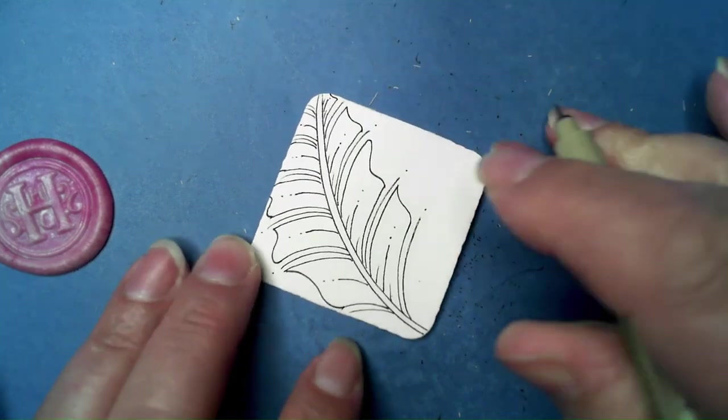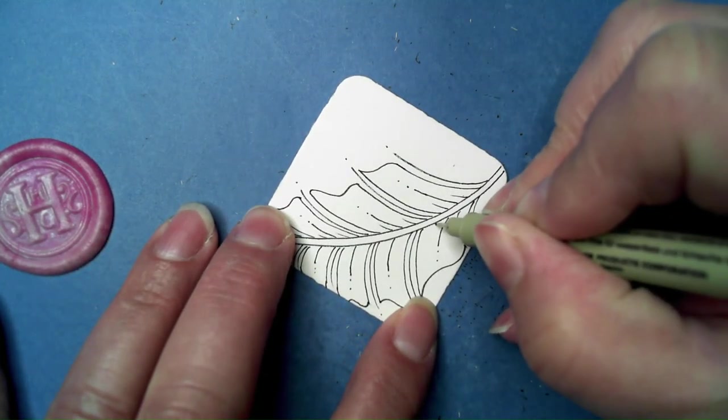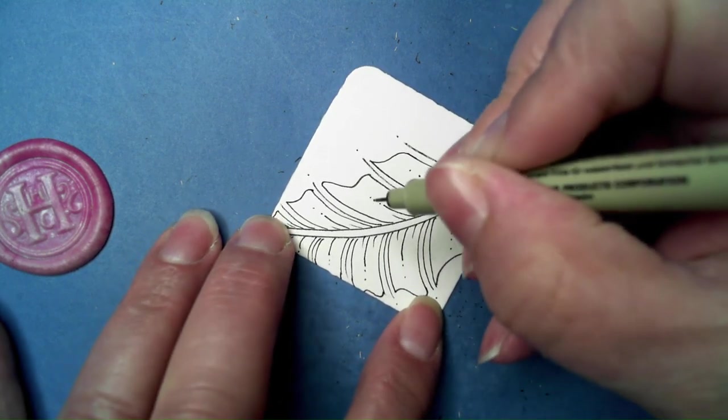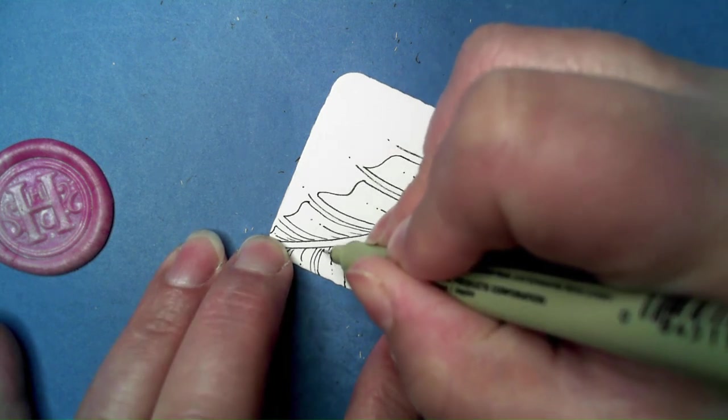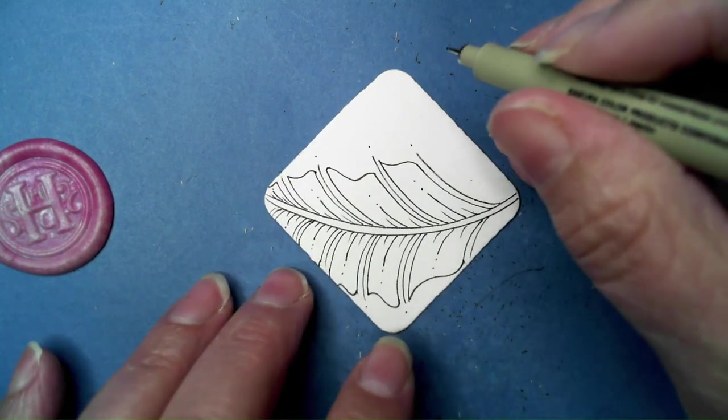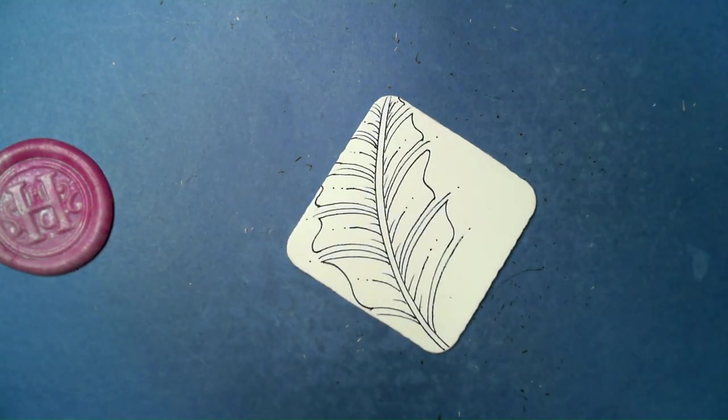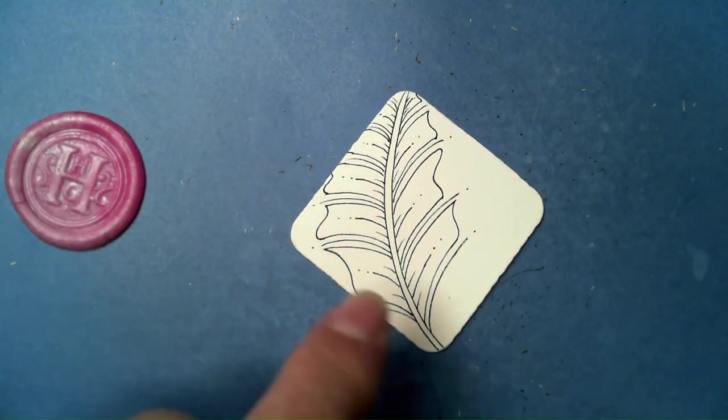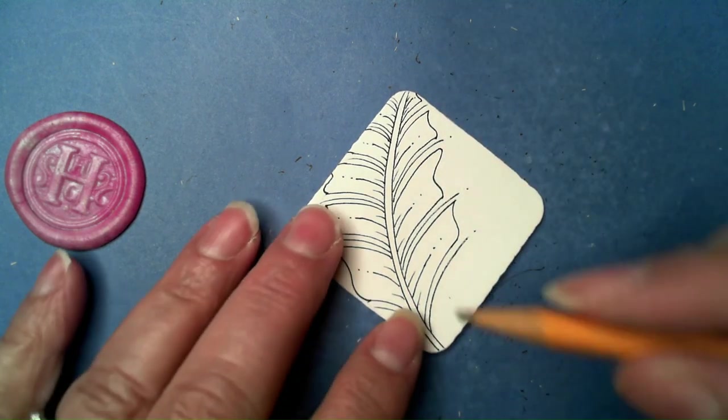She also had a couple other little lines just kind of going with the angle that's there already. I like to turn the tile because you get more chances of having a consistent curve line if you do this.